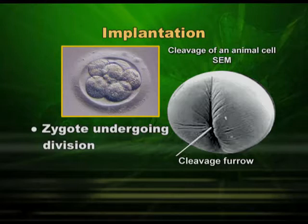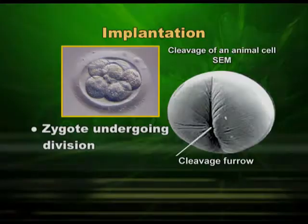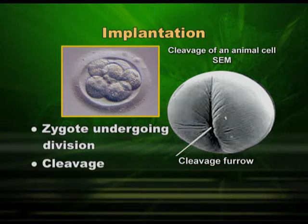Once fertilization has taken place in the fallopian tube, division begins immediately. While moving through the oviduct to the uterus, it is undergoing division continuously. The first division of a fertilized egg — the zygote — is called cleavage. You can see cleavage in the slide. This line indicates the first division, which divides the zygote into two cells.